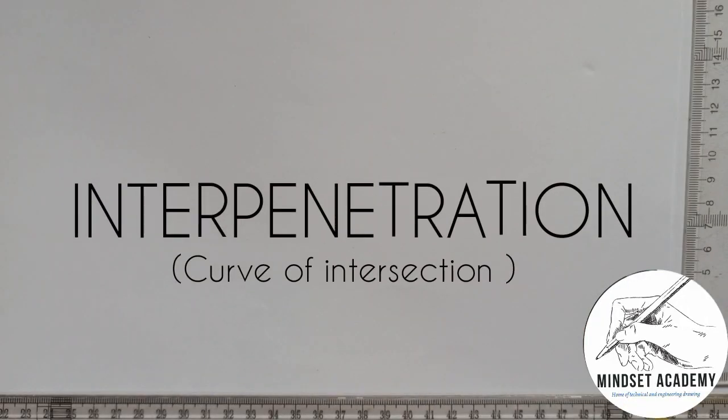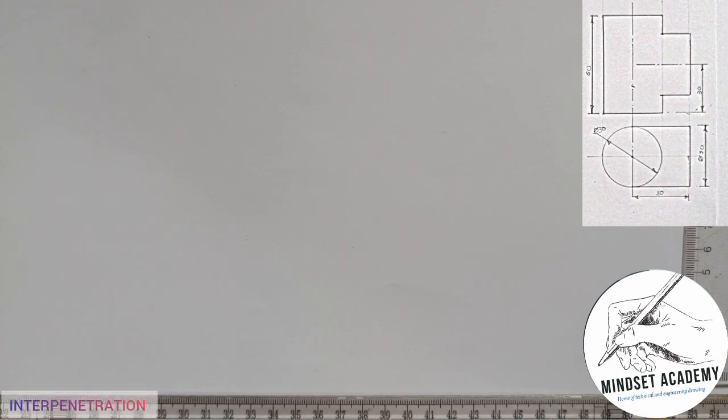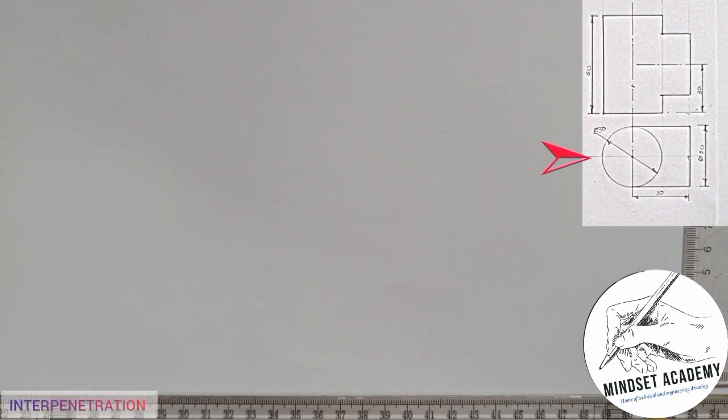Welcome to Mindset Academy. We are asked to draw the curve of intersection of two pipes penetrating each other, as displayed on the right-hand side of the screen. Pipe B is penetrating pipe A. One important thing to note is that these two pipes have equal diameter. The diagram shown has two views: the one above is the elevation, and the one below is the plan, looking from the top.